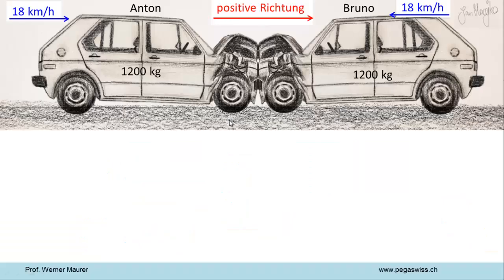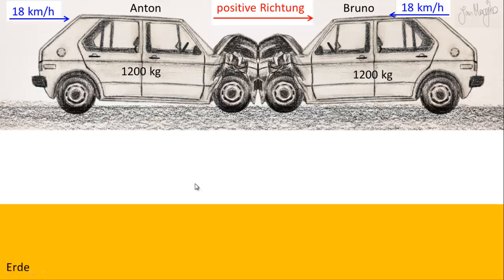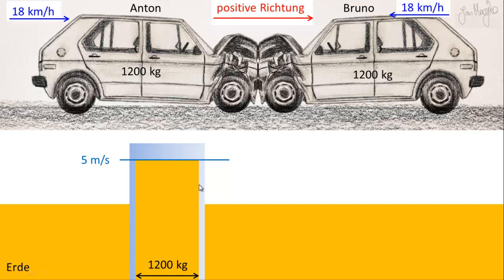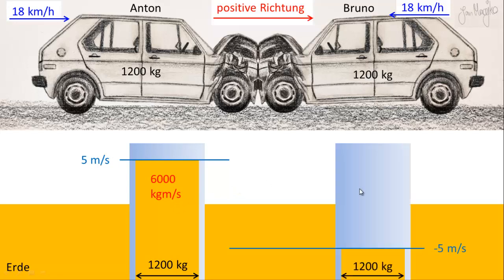Ein zweites Beispiel: Ante und Bruno fahren, umgangssprachlich gesagt, mit der gleichen Geschwindigkeit aufeinander zu. Die Wagen sind übrigens auch genau gleich schwer. Nach dem Stoß bleiben beide Autos einfach bockstill stehen. Jetzt könnte man sagen, der Impuls wird vernichtet. Aber das kann nicht passieren: Der Impuls ist eine Erhaltungsgröße. Wir übersetzen das ins Flüssigkeitsbild – wieder die Erde als großer See. Das Auto von Anton hat Masse und Anfangsgeschwindigkeit, was einen Impulsinhalt von 6.000 kg·m/s ergibt.